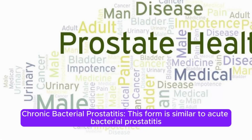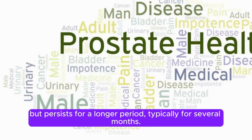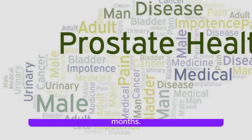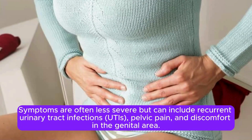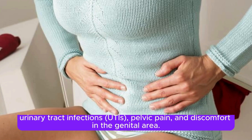Chronic bacterial prostatitis. This form is similar to acute bacterial prostatitis, but persists for a longer period, typically several months. Symptoms are often less severe, but can include recurrent urinary tract infections (UTIs), pelvic pain, and discomfort in the genital area.